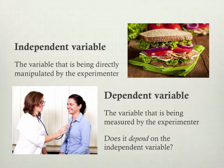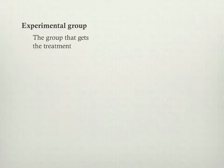We'd want to have one group getting a vegetarian diet and one group getting some kind of diet to compare that with. So the terminology we use here is this: we say one group is the experimental group — this is the group that gets the treatment.